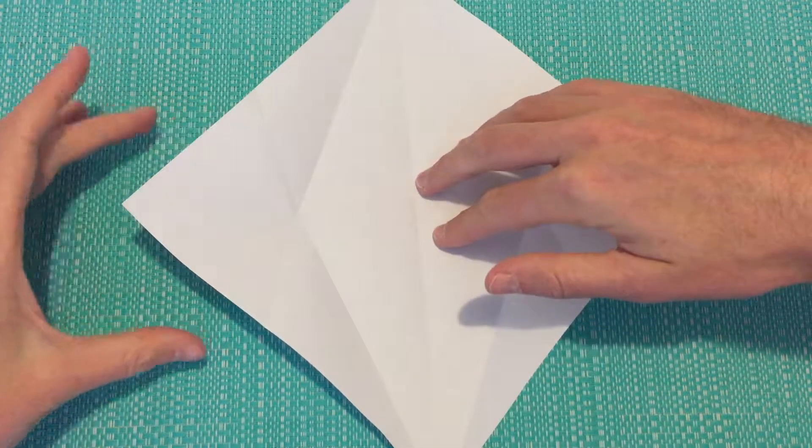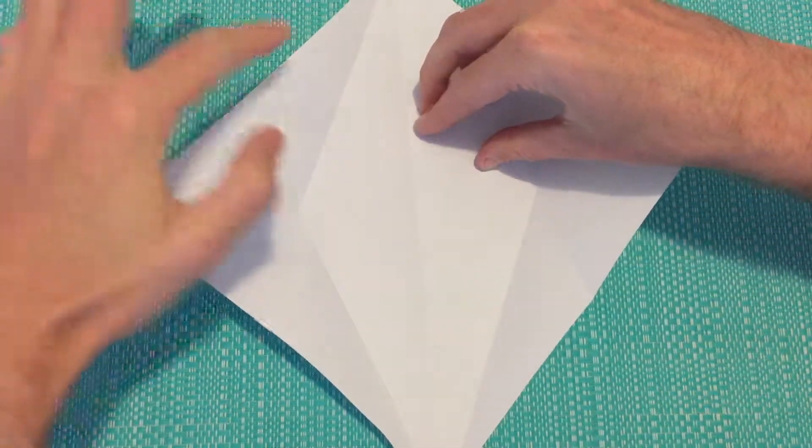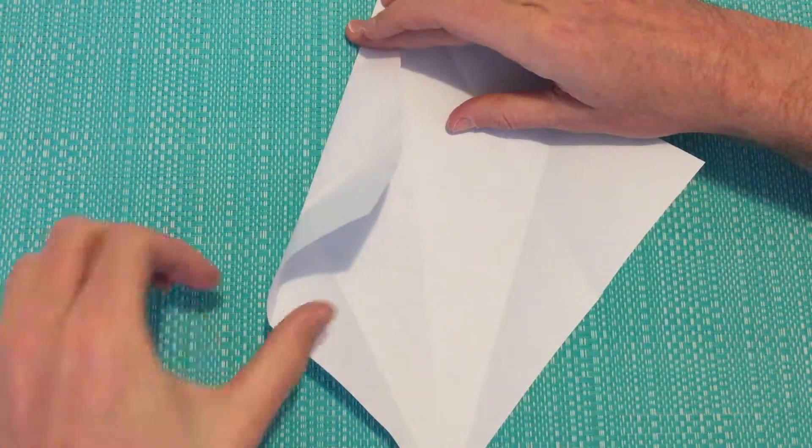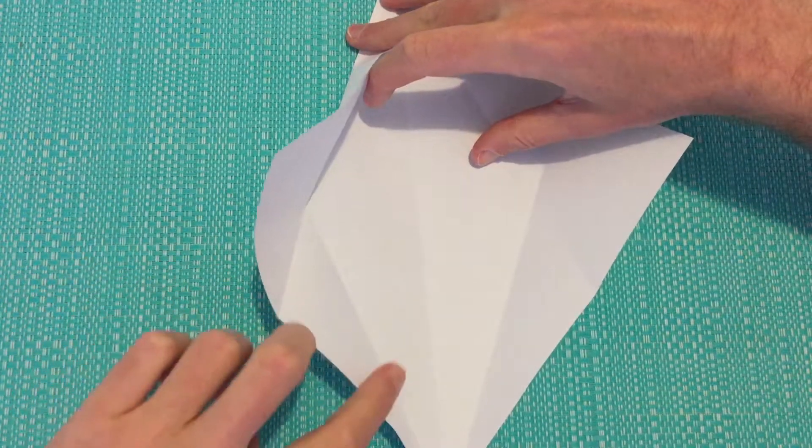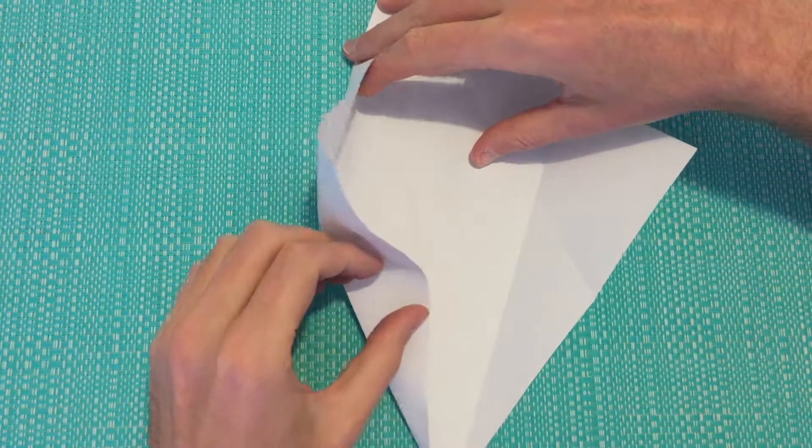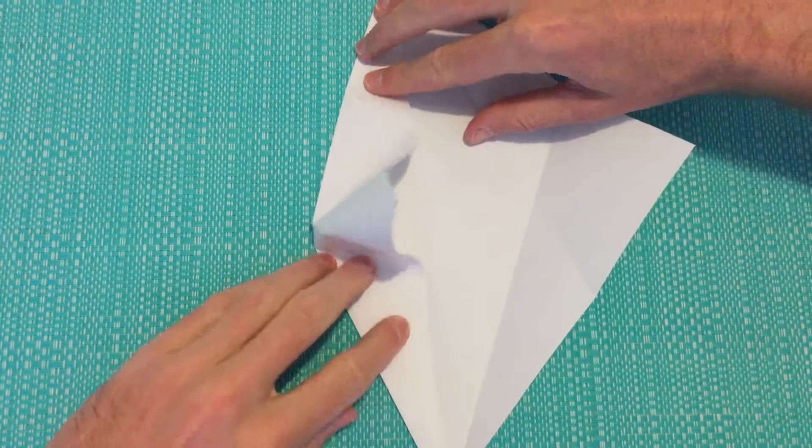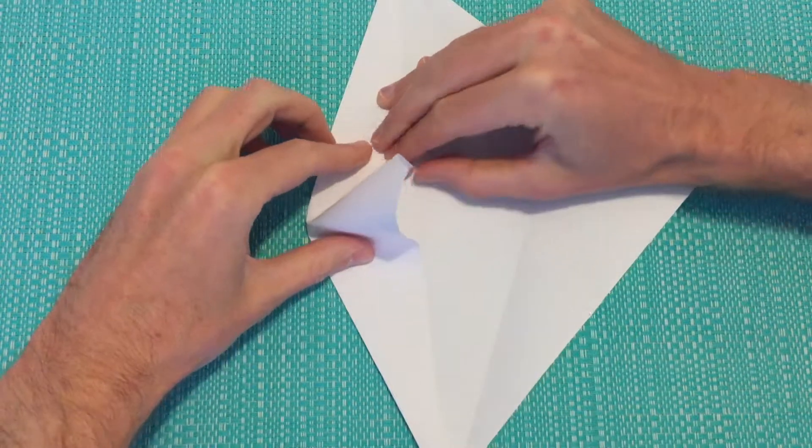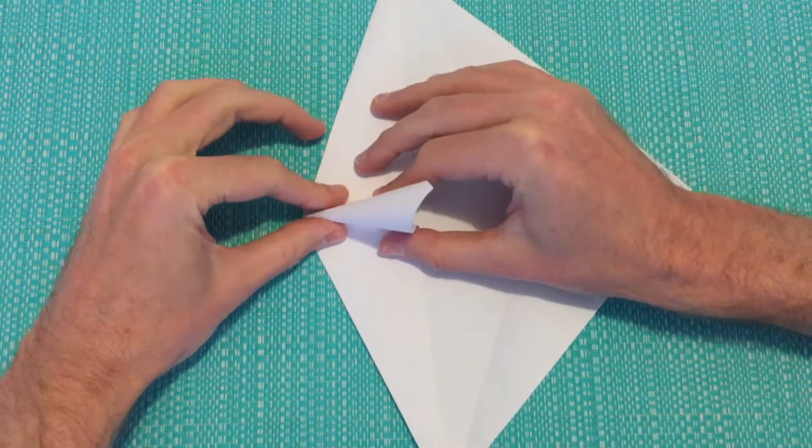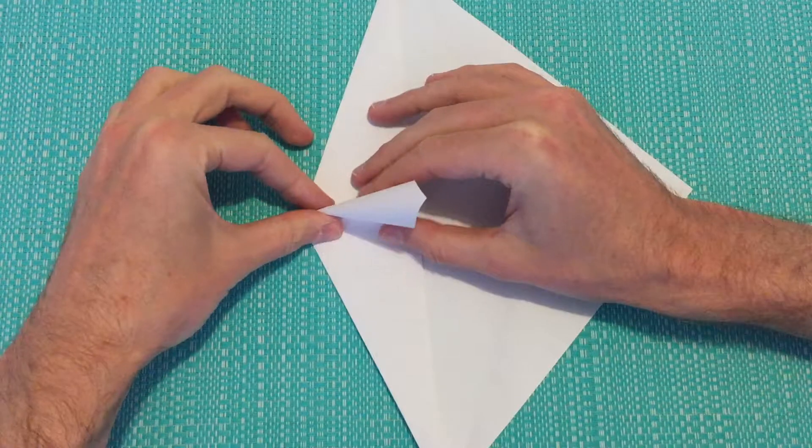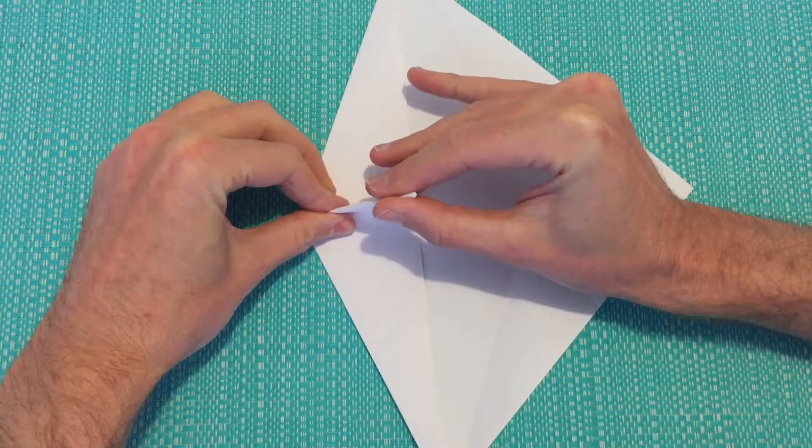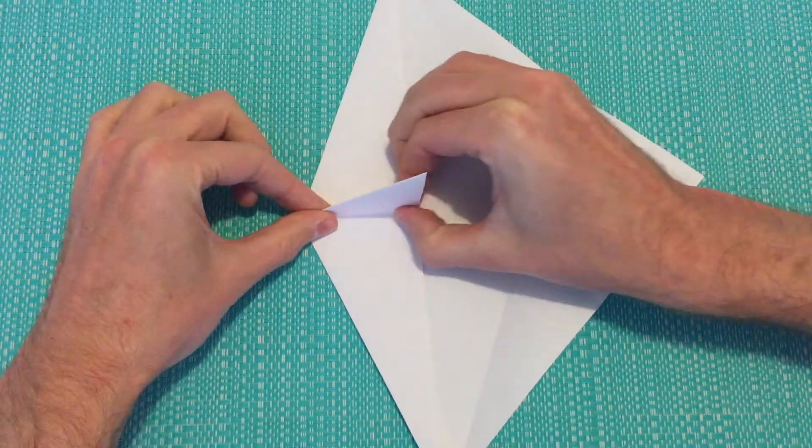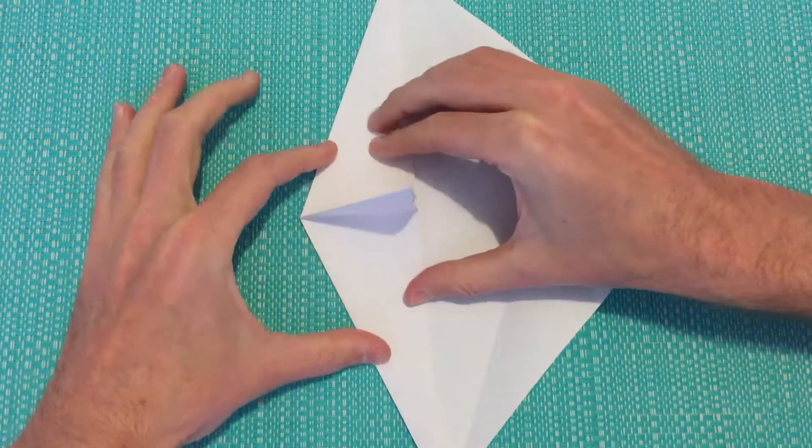We'll work firstly on the left hand side. We'll start bringing this edge into the center line, only partly though. Because we'll then bring this edge also into the center line. As we do that, we'll just walk our fingers towards the middle. As we keep doing that, we left a little bit in the center.